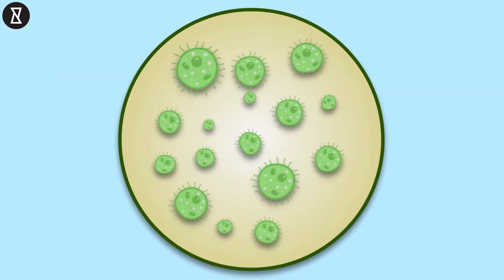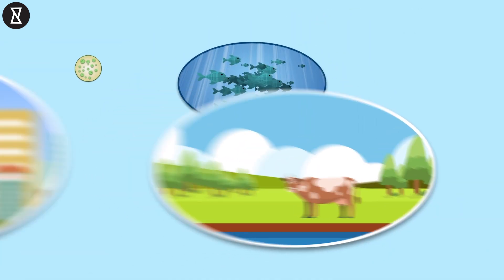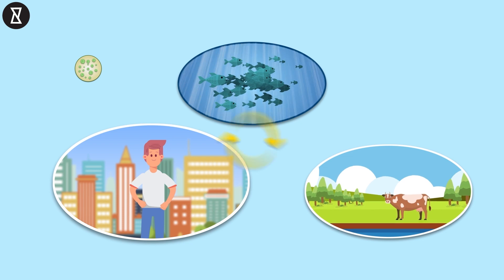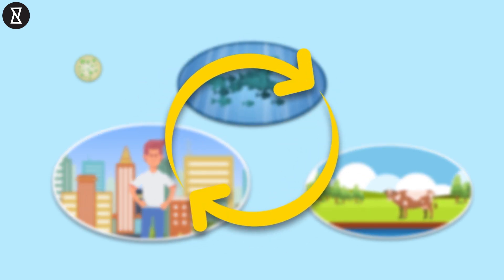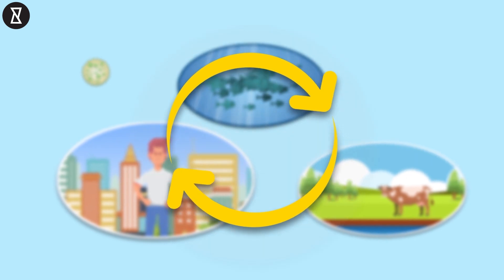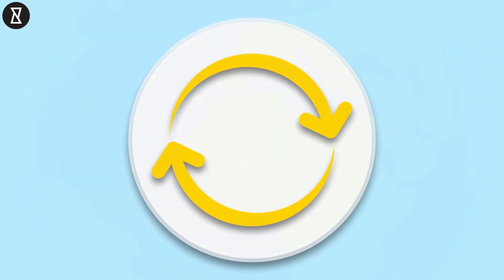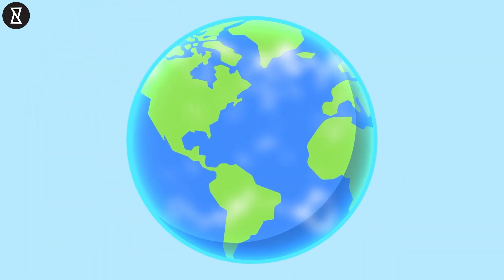This theory argues that all living organisms, along with their inorganic surroundings, adapted and evolved as a collective whole in the form of one giant, self-regulating system that keeps things in place in order for life to survive on Earth.